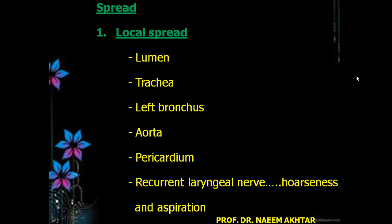Spread — first local spread: locally it will fill the lumen of the esophagus, then it may spread to the trachea, left bronchus, aorta, pericardium. It may spread to involve the recurrent laryngeal nerve — when it involves the recurrent laryngeal nerve the patient may have hoarseness and aspiration as well.